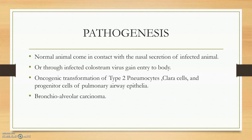Oncogenic transformation occurs in type 2 pneumocytes, Clara cells, and progenitor cells of the pulmonary airway epithelium. Type 2 pneumoepithelial cells proliferate at a cancerous rate, so that the proper airway passage becomes obstructed by the rapidly dividing type 2 pneumocytes and Clara cells. As a result, the air passage lumen size decreases, so sufficient oxygen cannot enter the lungs and lung insufficiency develops.